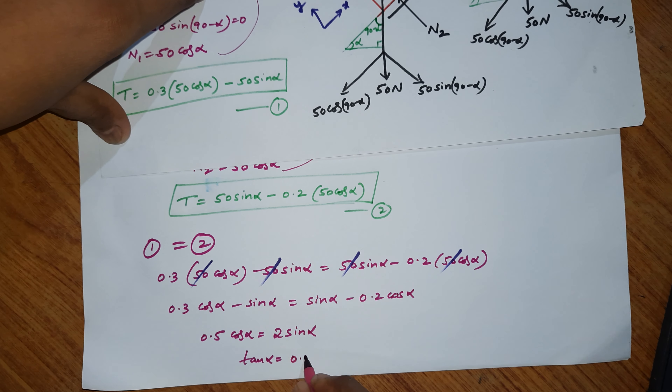Using a scientific calculator: alpha = tan inverse(0.25) = 14.03 degrees. Therefore, alpha = 14.03 degrees.